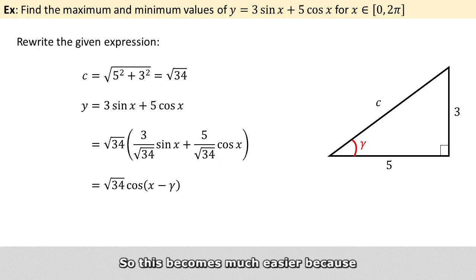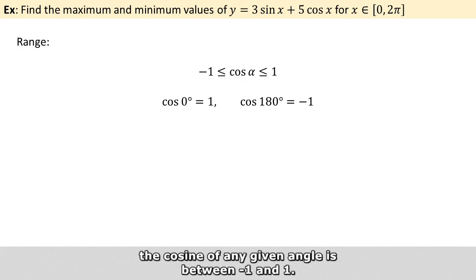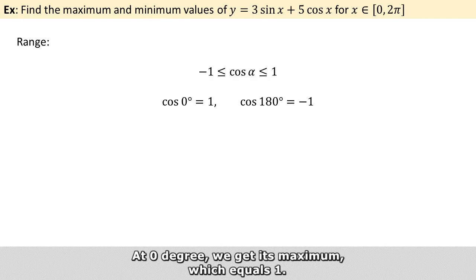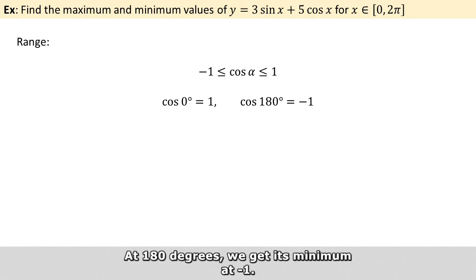So this becomes much easier because the cosine of any given angle is between minus 1 and 1. At 0 degrees, we get its maximum, which equals 1. And at 180 degrees, we get its minimum at minus 1. However, for such problems,